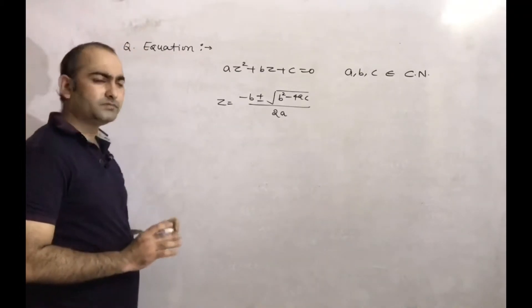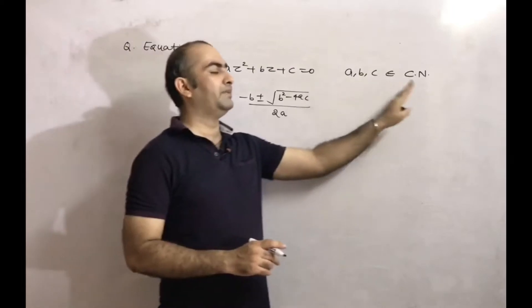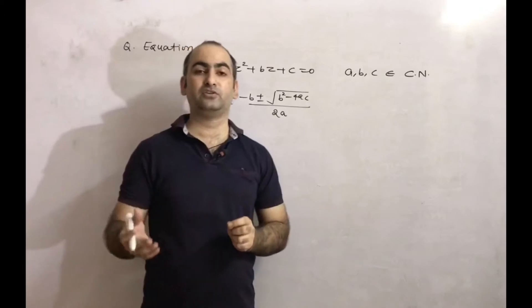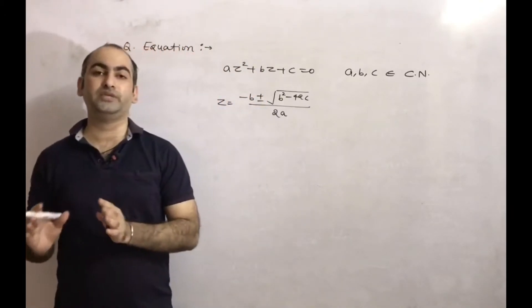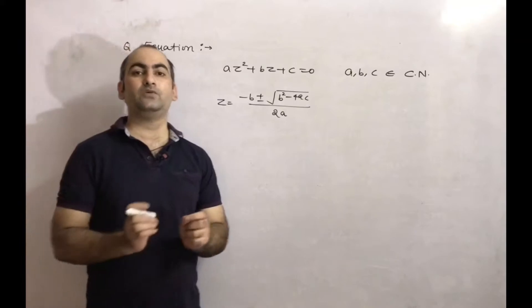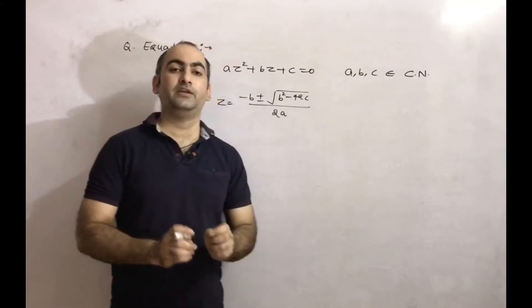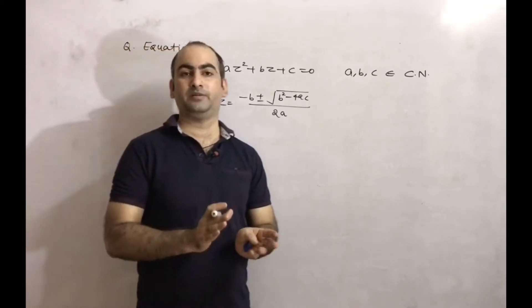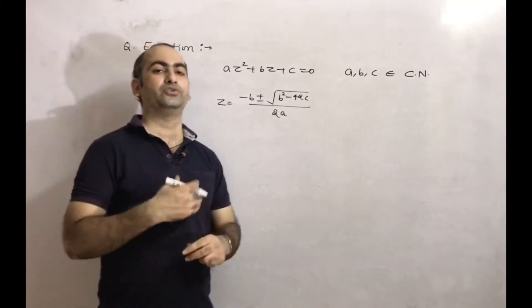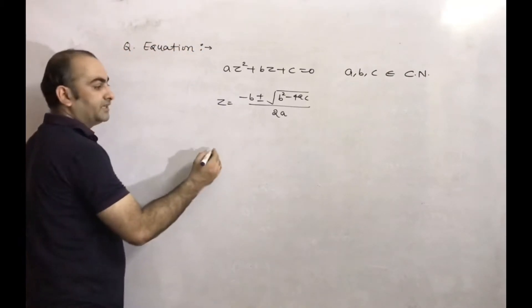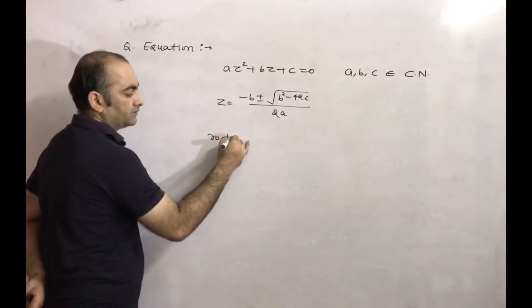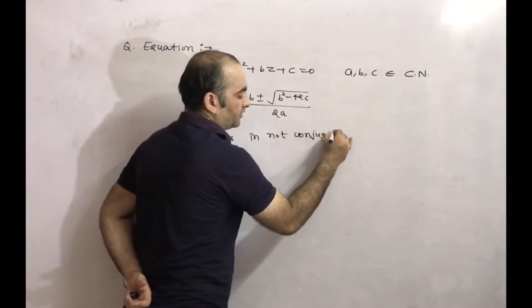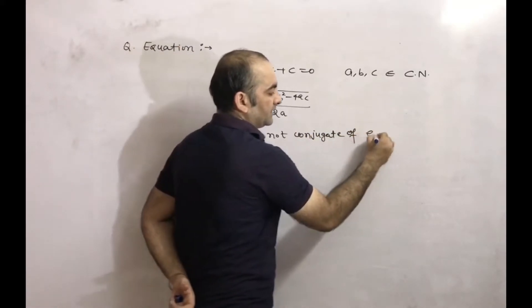One important thing: here a, b, c are complex numbers. That means if one root is a complex number, the other root can also be complex, or can be real. But they are not conjugate to each other. In a real quadratic equation, if a, b, c are real and one root is imaginary, then the other root is also imaginary and they are conjugates. But here, there is no such requirement — the roots are not conjugates of each other.